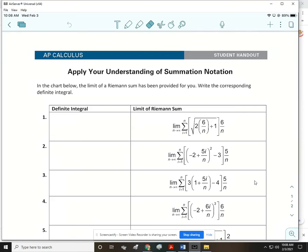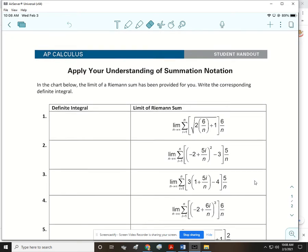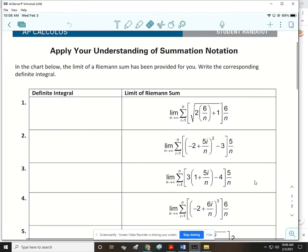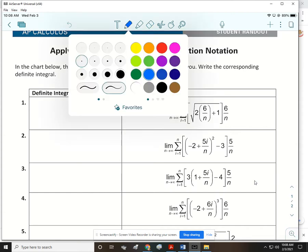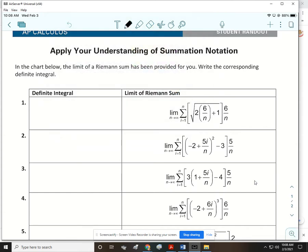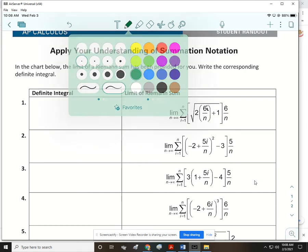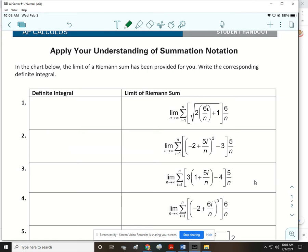So today I'm going to do two on the front and two on the back of this sheet. We are given the limit of the Riemann sum, and then we are going to write the definite integral that corresponds to that. So we would start, oh first, there is a typo on here. This should have an i after the 6. Now don't let it worry you that this uses i instead of k. That's perfectly fine, it's no big deal.